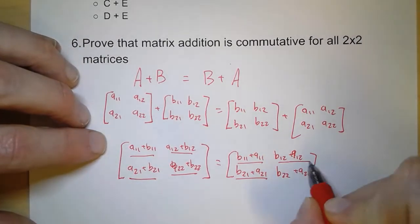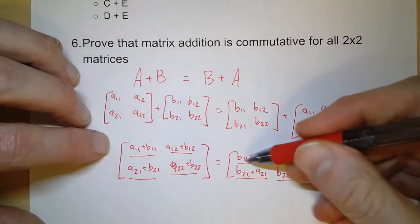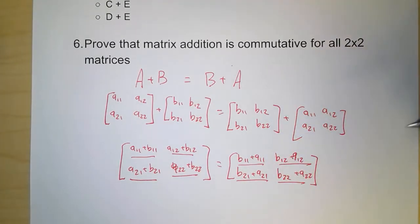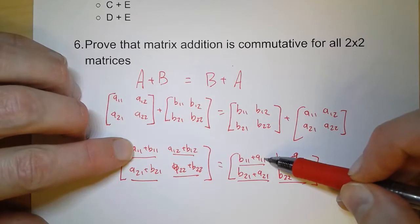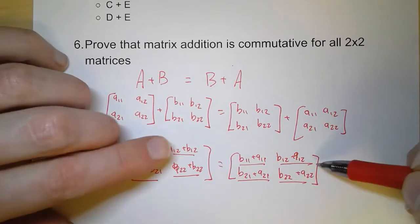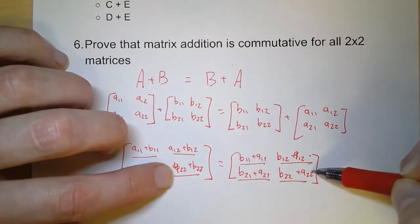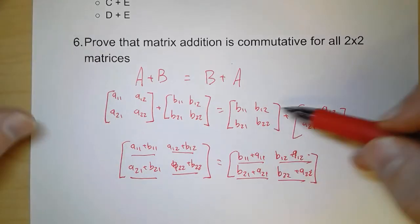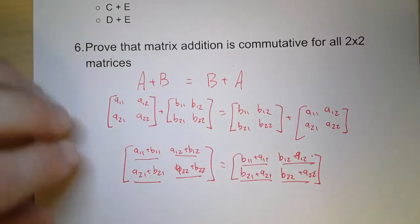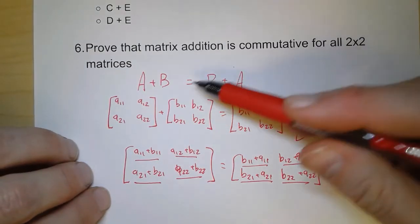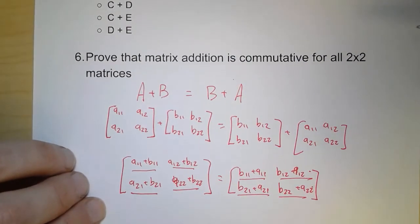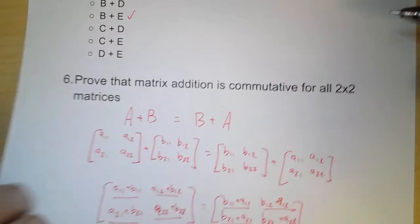Now the only difference is that each of the numbers are switched around. And fortunately, because addition is commutative for all individual numbers, then we can say this quantity and this quantity are the same. These two are the same. These two are the same. And these two are the same. So that means that these two matrices are indeed equal. And so, thus we've shown that we can add matrices in any order we want to and it will still work.